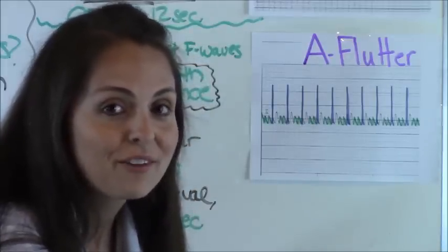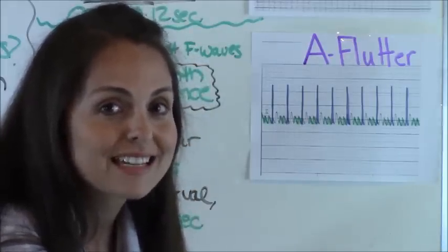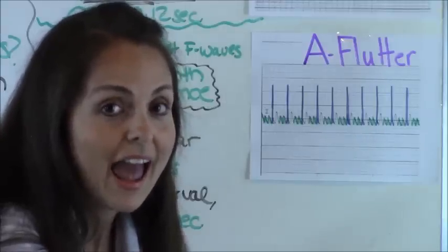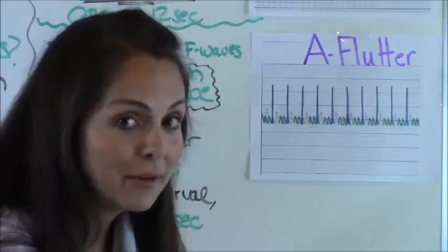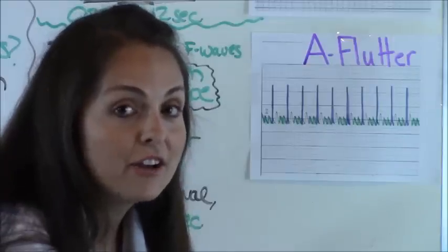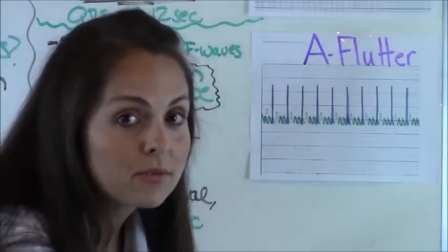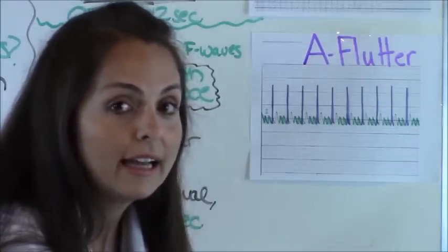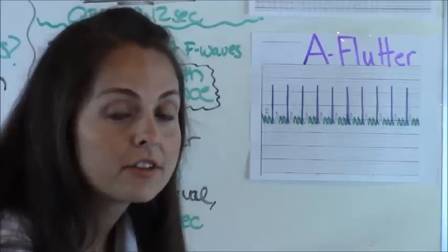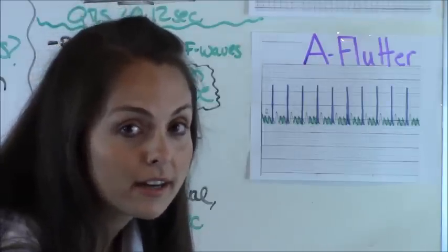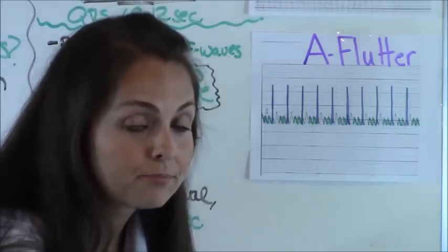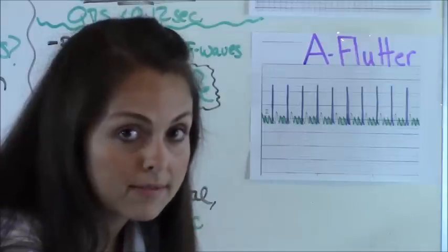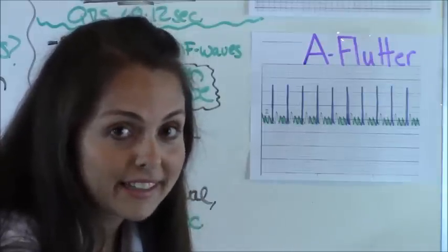So let's go over the difference between atrial fib and atrial flutter. In AFib, you will have no P waves and your R waves will typically be irregular. In AFlutter, you will have the sawtooth appearance of your F waves, there will be no P waves, and your R waves will be regular.